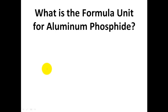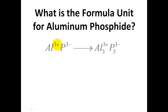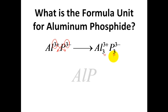Please try the formula unit for aluminum phosphide. Aluminum has a 3-plus charge and phosphorus has a 3-minus charge. Crisscross them and you end up with 3 and 3 at the bottom. Whenever you have common numbers, you can reduce them — 3 and 3 reduce to 1 and 1, giving Al₁P₁, written simply as AlP.